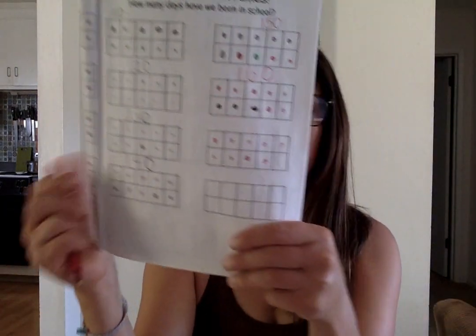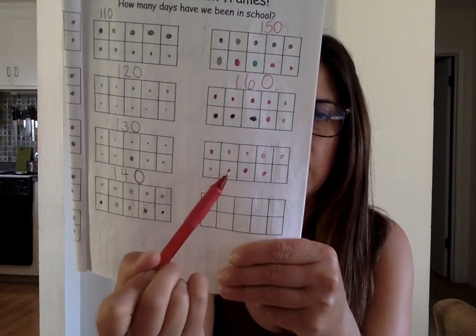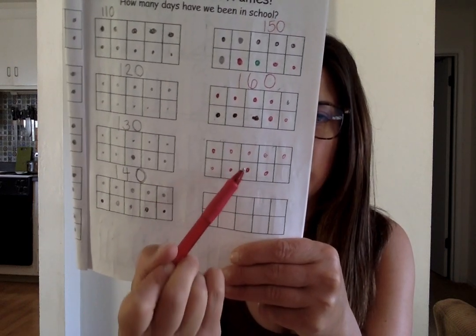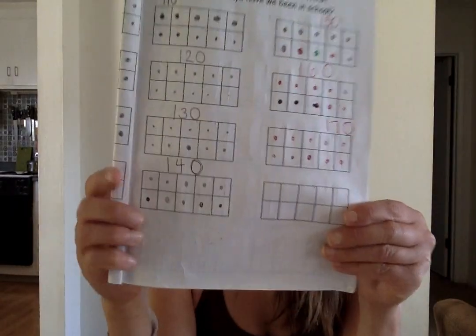That means on the next page we'll have a full 10 frame. Let's count by 10s: 10, 20, 30, 40, 50, 60, 70, 80, 90, 100, 110, 120, 130, 140, 150, 160. And now: 165, 166, 167, 168, 169 — and one more will be 170. So we'll write 170 on the top.